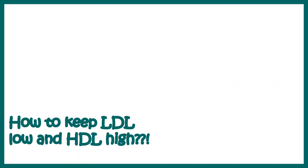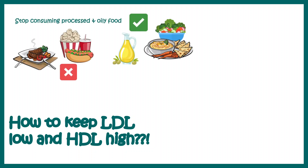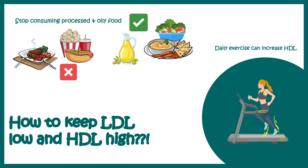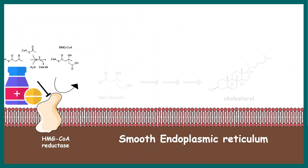How do we keep LDL low and HDL high? If we avoid oily, processed, and deep-fried foods our LDL will be automatically lower. Instead, healthy choices like olive oil, homemade food, salads, and vegetables can help keep LDL low. Daily exercise boosts HDL levels. What matters most is the ratio between LDL and HDL — HDL should be high and LDL should be low. If dietary and lifestyle modification doesn't work, doctors may prescribe medicines that block the rate-limiting step of cholesterol biosynthesis, thereby reducing LDL levels in the blood.